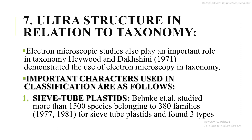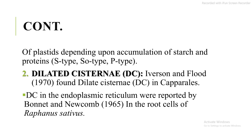Seventh, ultrastructure in relation to taxonomy. Electron microscopic studies play an important role in taxonomy. Heywood and Dechnie (1971) demonstrated the use of electron microscopy in taxonomy. An important character used in classification is sieve tube plastids. Behnke et al. studied more than 1500 species belonging to 380 families from 1977 to 1981 for sieve tube plastids and found three types depending upon accumulation of starch and proteins: S-type plastids, O-type plastids, and P-type plastids.